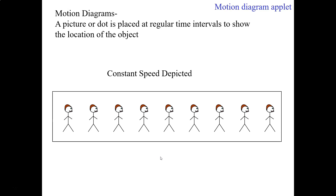Motion diagrams are kind of like that thing at the Magic House where it flashes a light and you leave a shadow on a green wall. So this is like you're walking along and the light flashes, leaving a shadow at each place where the light flashes. This is showing constant speed, and we know that because the spacing is even between each of the flashes.